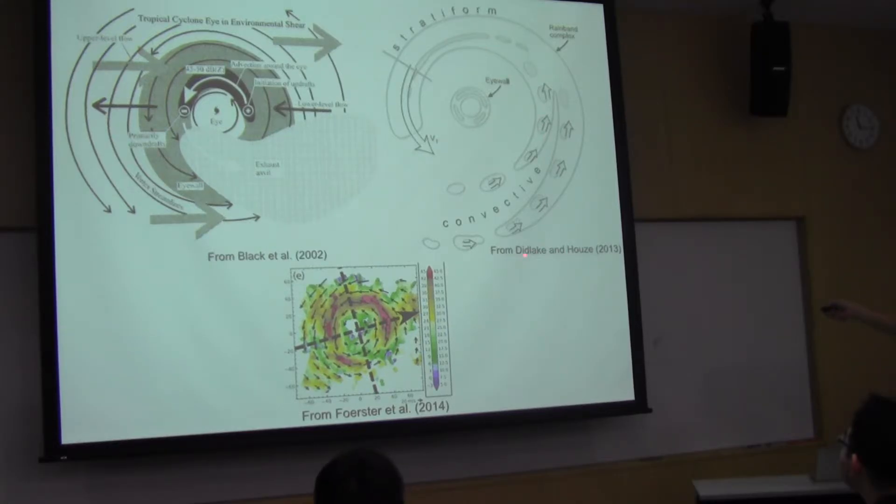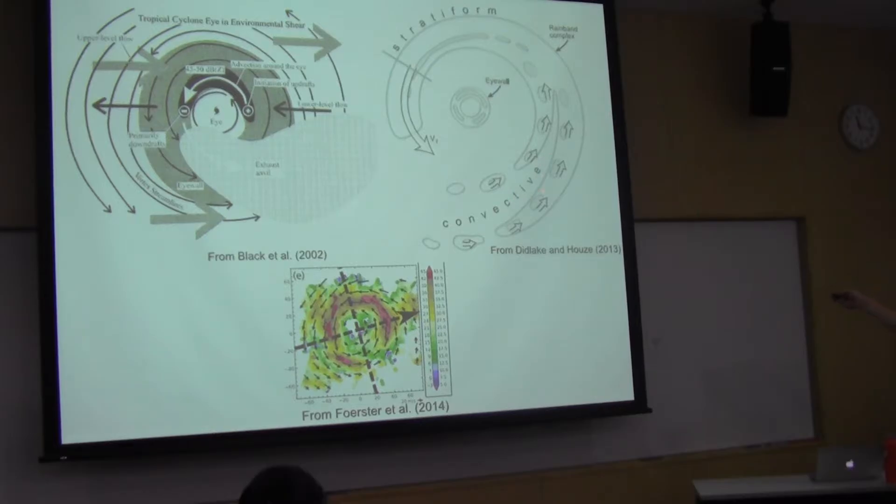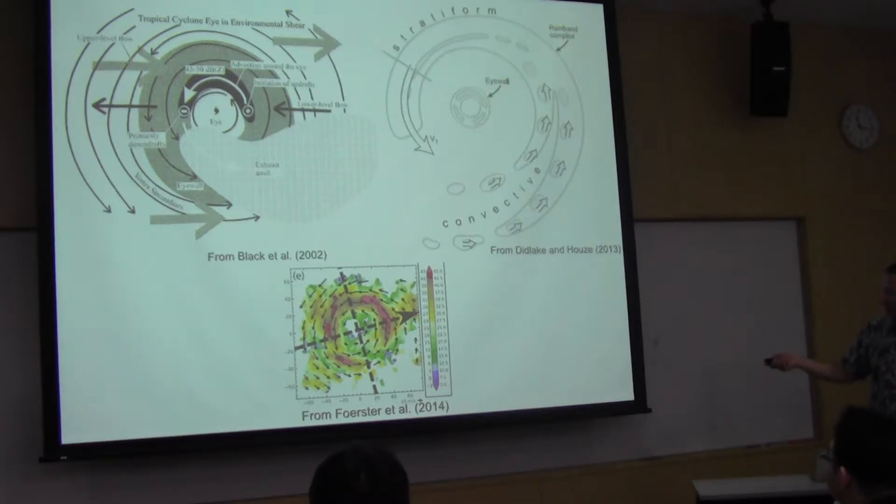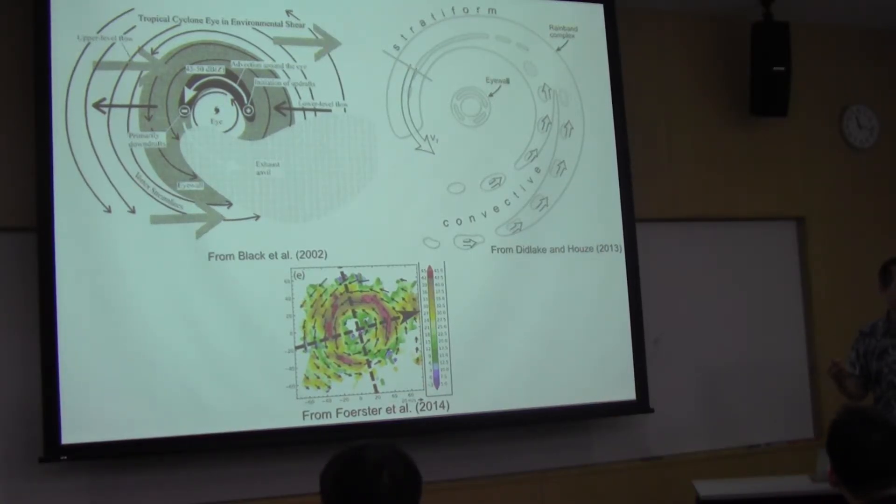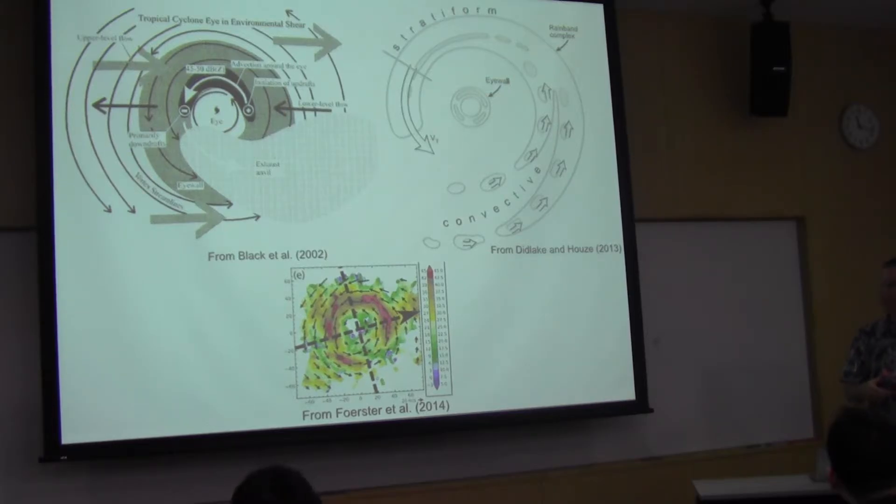This is another schematic from Anthony Didlake and Houze talking about the primary rain band. I already showed you the one from Houze that also shows the same thing - this rain band complex of primarily convective initiation here and then transitioning to stratiform here. We think we're seeing the same thing in the eyewall actually occurring here. This work, and also the RAINEX work, suggests the difference between an eyewall and a rain band may not be as strong as we think. Sometimes the eyewall looks a lot like a rain band. Sometimes it looks more like a strong eyewall. Same with the secondary eyewall. There are all different variations on the same thing that depend a lot on the dynamics, the strength of the swirling wind, and the convection.